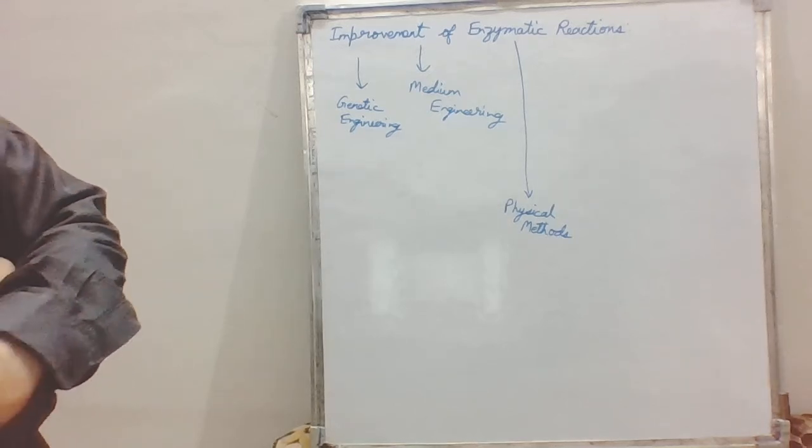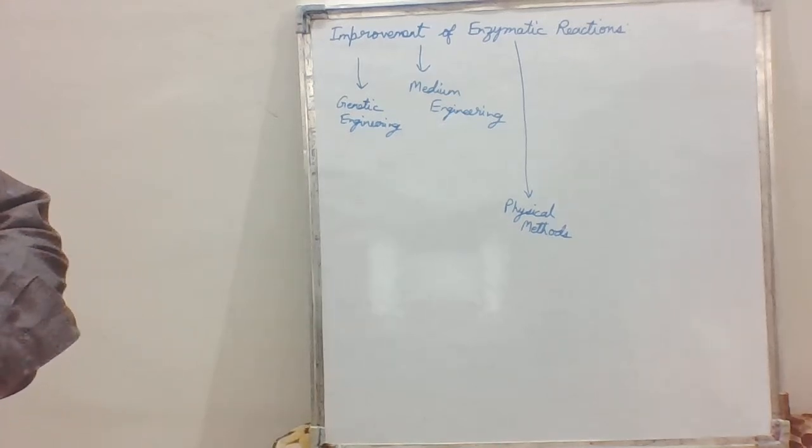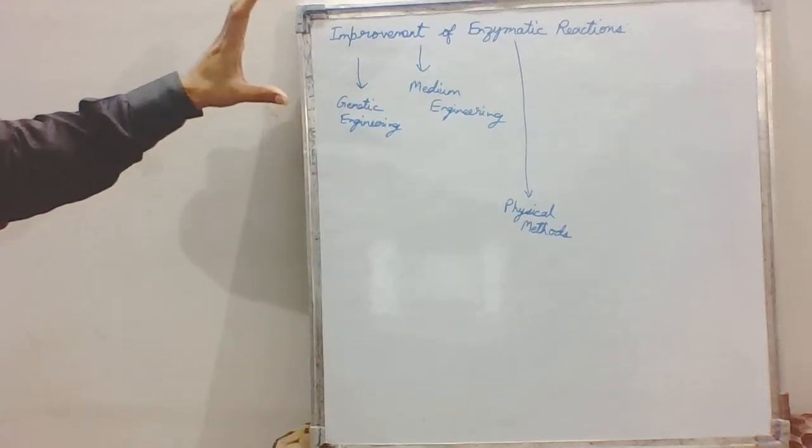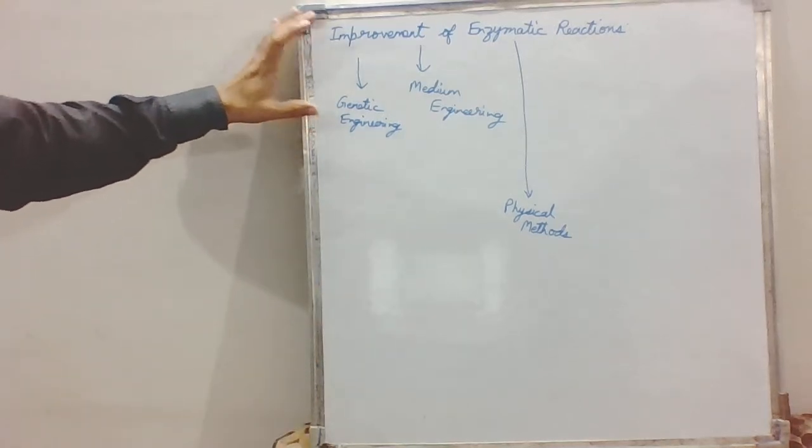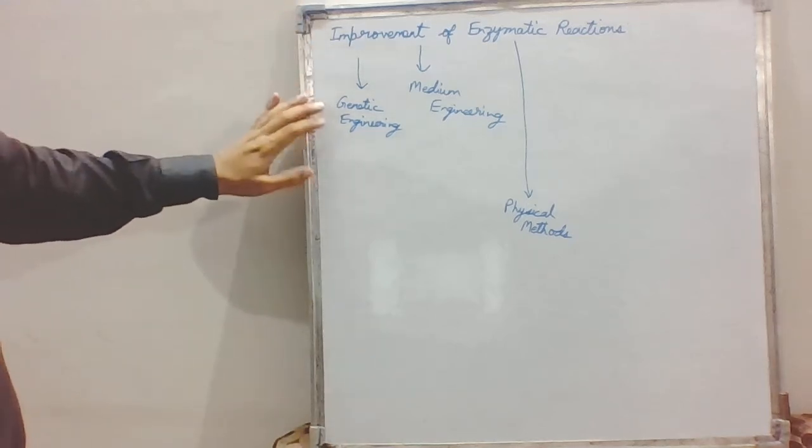For modifying our enzymatic reactions, we can either modify our enzymes or we can change the physical surroundings or the chemical surroundings of the enzyme. For modifying the enzyme, there is one way: genetic engineering. We can change the linear sequence, the amino acid sequence of the protein enzyme.